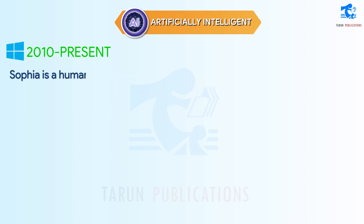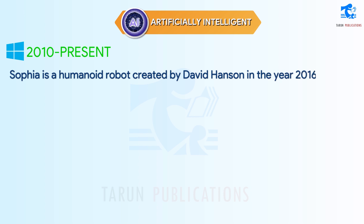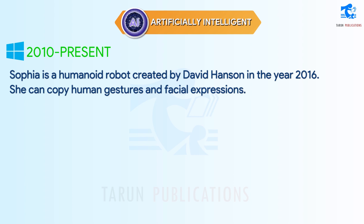Sophia is a humanoid robot created by David Hanson in the year 2016. She can copy human gestures and facial expressions.